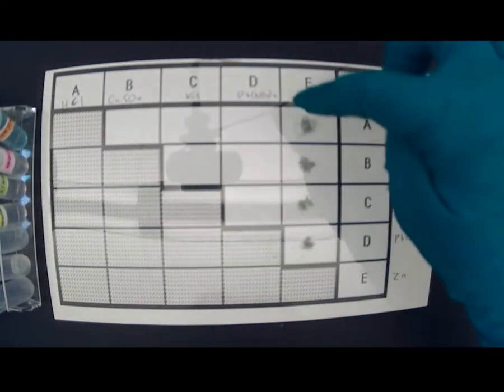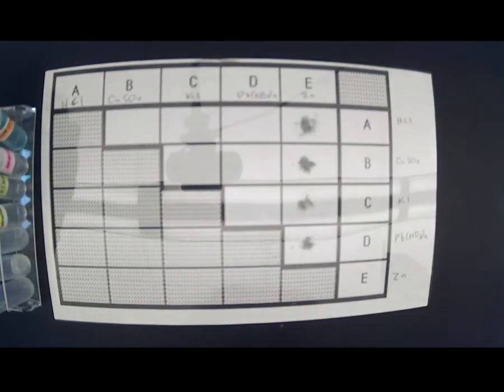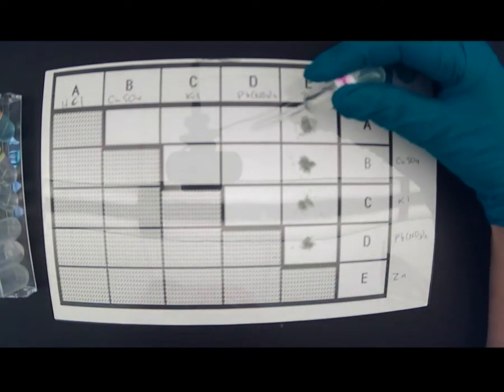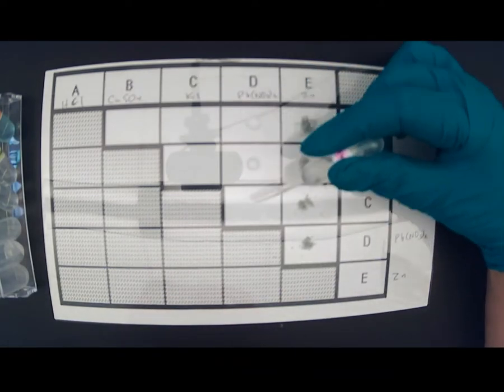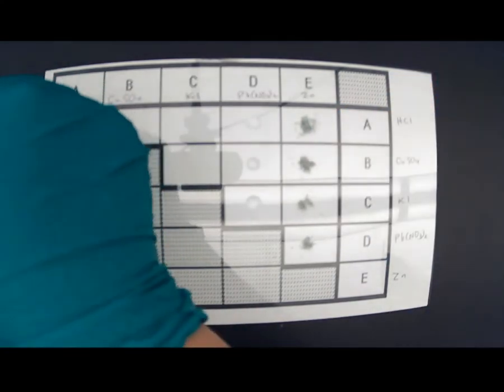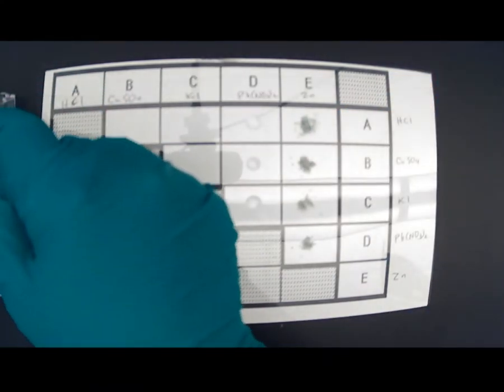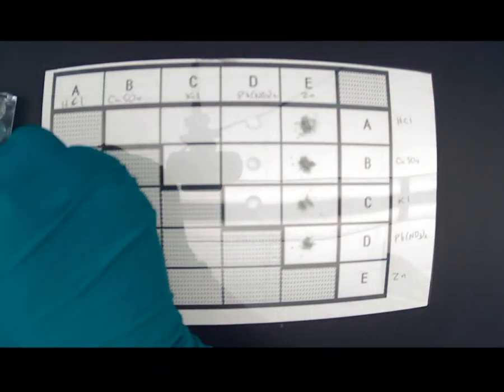On the second to last column it says lead nitrate, so I'm going to do that column first. I'm just adding one drop each — one, one, one. Okay, so that was my lead nitrate column.